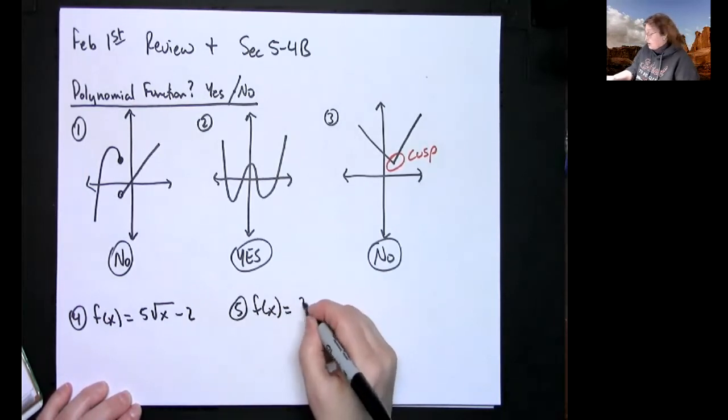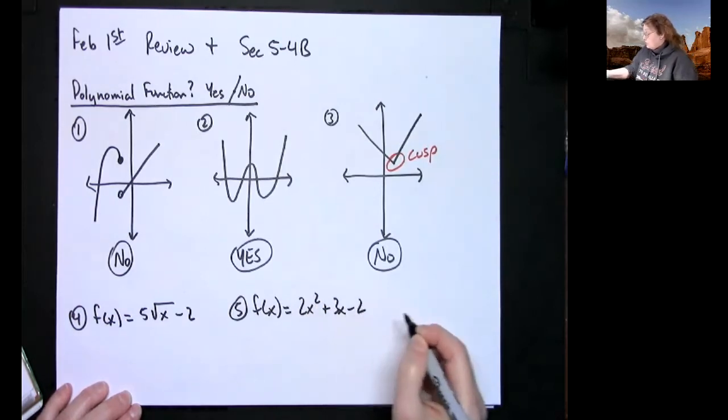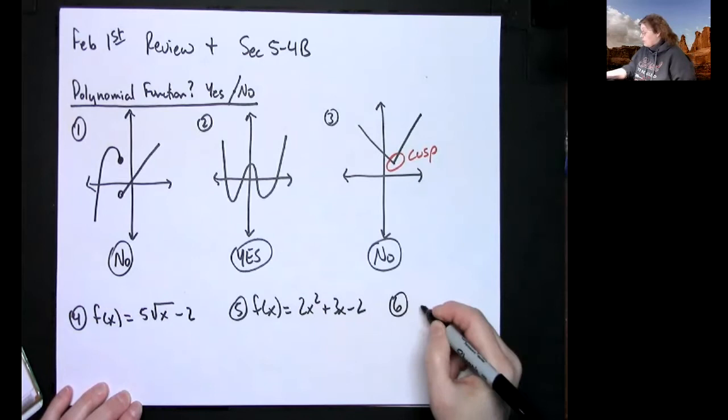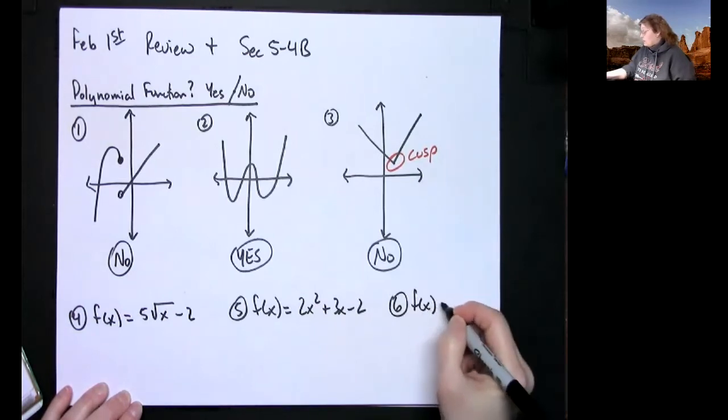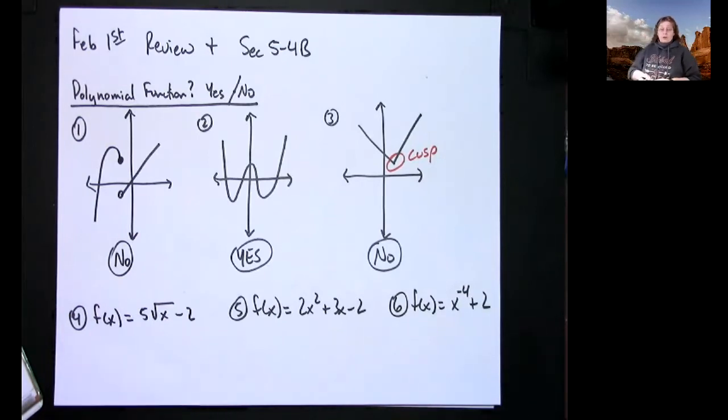maybe say 2x² + 3x - 2. Now let's go ahead and do another one, f(x) = x⁻⁴ + 2. So again, I've just wrote